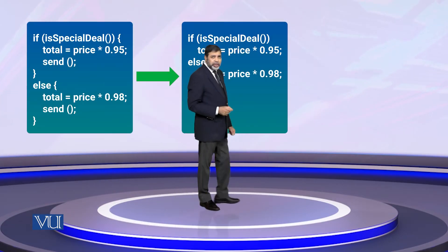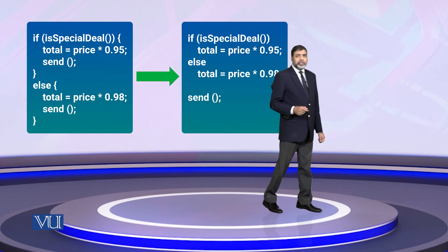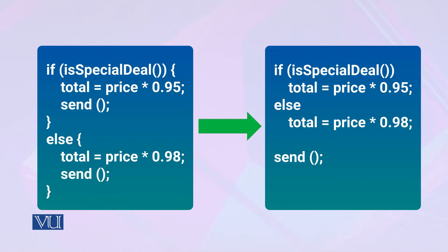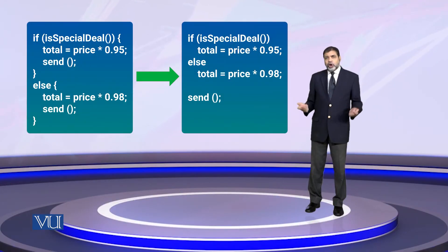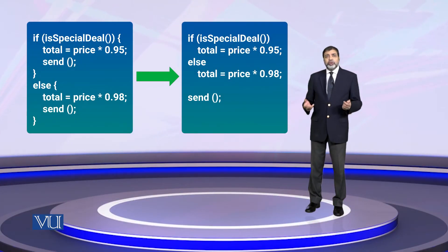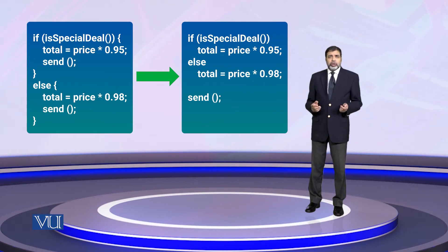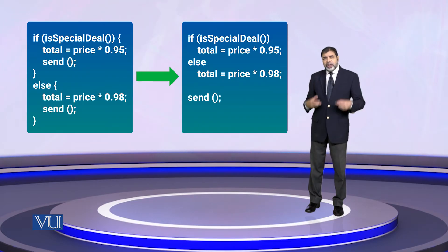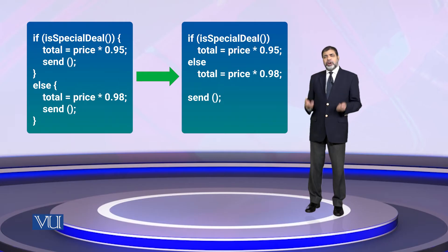If you send something to two places and put it in one place, you can add a parameter. If you have code in two places and you move it to one place, you only need to change it in one place. If the same code appears in multiple places, the biggest problem is that you may change it in some places but miss others.